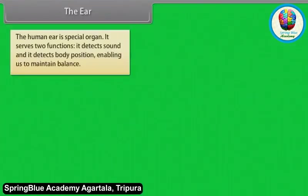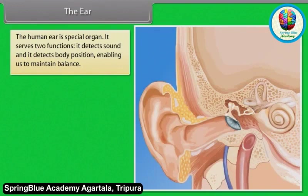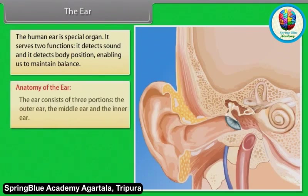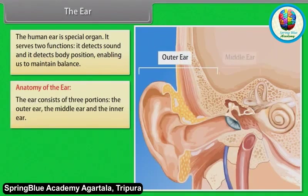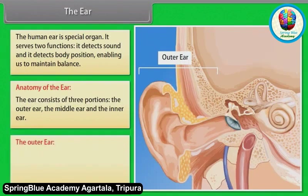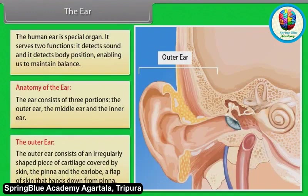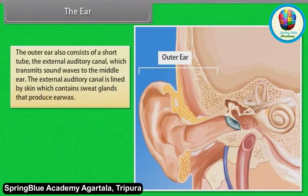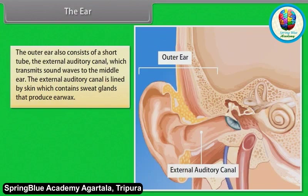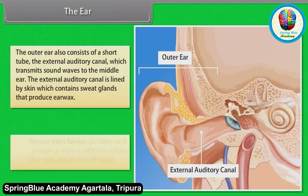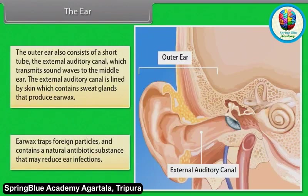The human ear is a special organ that serves two functions: it detects sound and detects body position, enabling us to maintain balance. The ear consists of three portions: the outer ear, the middle ear, and the inner ear. The outer ear consists of an irregularly shaped piece of cartilage covered by skin called the pinna, and a short tube called the external auditory canal, which transmits sound waves to the middle ear.